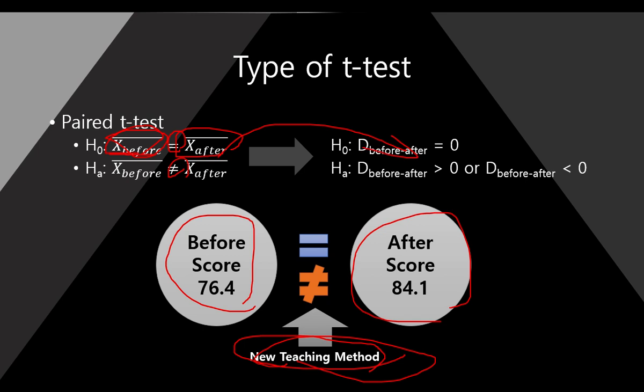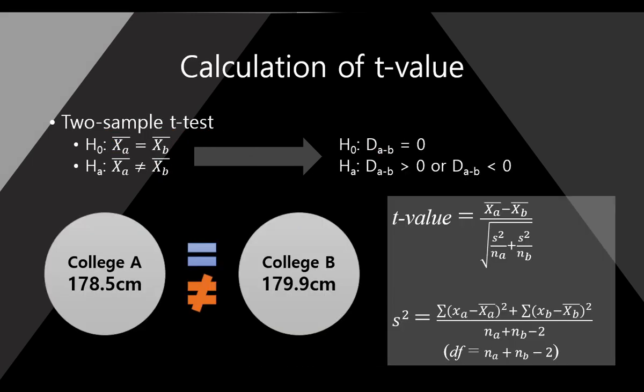This is very similar to the two-sample T-Test. However, it is paired. It means that the students or the subjects are the same, and they are examined two times: before and after.